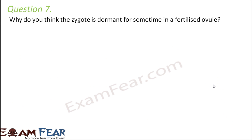Question number 7: Why do you think the zygote is dormant for some time in a fertilized ovule? As soon as the ovule gets fertilized, it becomes a seed. Inside, a zygote is formed and a primary endosperm cell (PEC) is formed. So two things are formed inside.